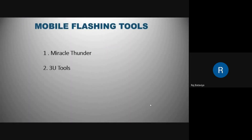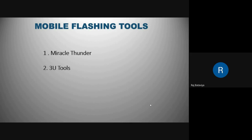The last topic is mobile flashing tools. The first tool is Miracle Thunder. When we use a flashing platform on our device or website, it gives us a mobile flashing platform. That flashing image will remove the Google account lock on the device.